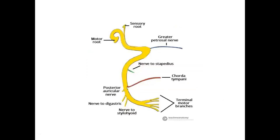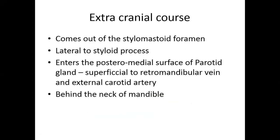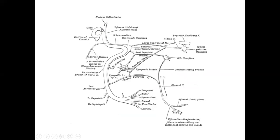Extracranial course: once it comes out of the stylomastoid foramen, it enters the parotid gland and gives the five terminal branches — temporal, zygomatic, buccal, marginal mandibular, and cervical. It is lateral to the styloid process and enters the posterior medial surface of the parotid gland, superficial to the retromandibular vein and external carotid artery, going behind the neck of the mandible. So: three branches in the facial canal, three branches just after the stylomastoid foramen, and five terminal branches — total eleven branches of the facial nerve.